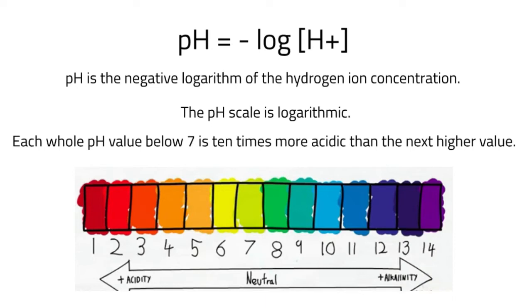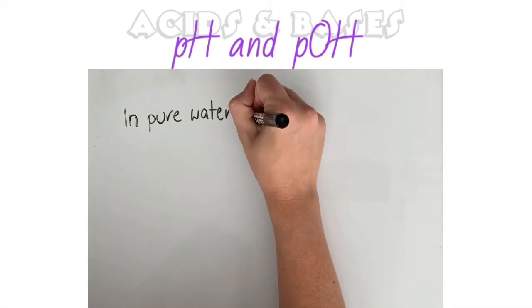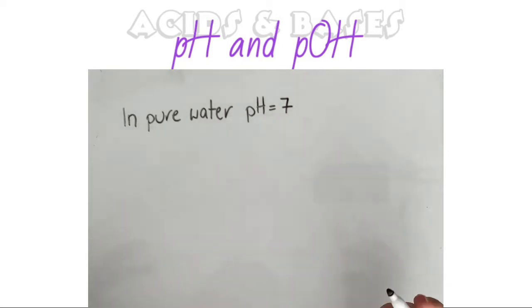Let me show you a couple of examples. We know that in pure water, the pH equals 7. But why does it equal 7?